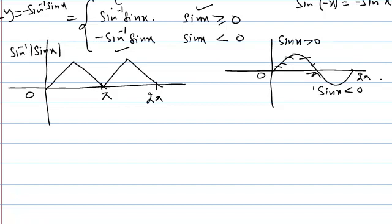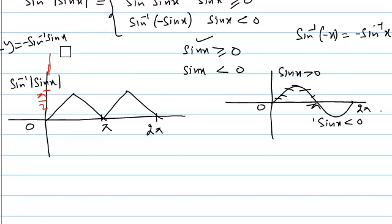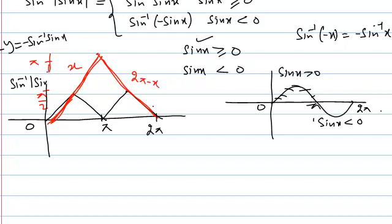Now drawing both graphs on the same scale: cos⁻¹(cos x) has value π/2 at the midpoint. When we draw cos⁻¹(cos x) on the same scale, the graphs overlap significantly because in both functions the equation of the line is x in the first piece — both cos⁻¹(cos x) and sin⁻¹(sin x) equal x there — and both equal 2π − x in the second piece.